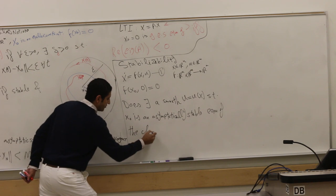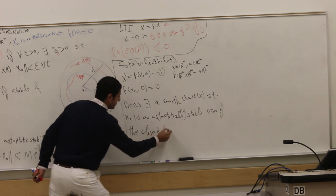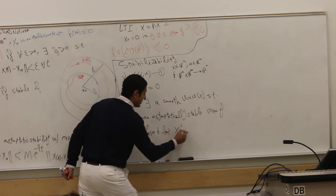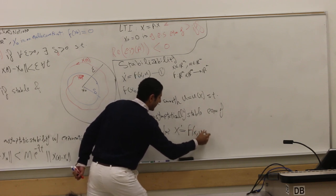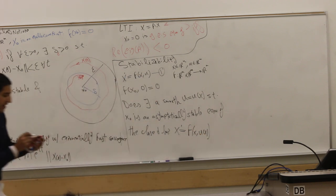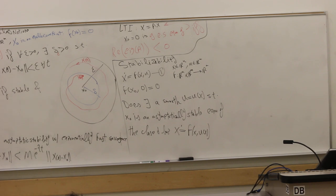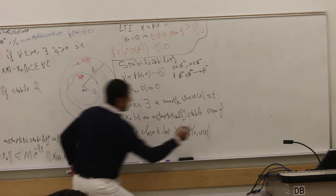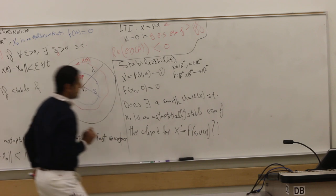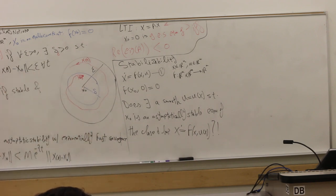Stable equilibrium point of the closed loop system. Closed loop after you substitute by your control, so x_0 now becomes f(x,u(x)). The right hand side now is just a function of x, and if you have the right hand side with a function of x and have an equilibrium, we rigorously define what we mean by asymptotic stability, okay? This is the stabilizability question. Any question about that?